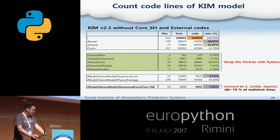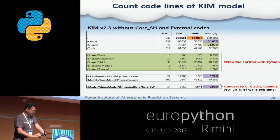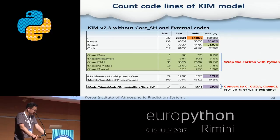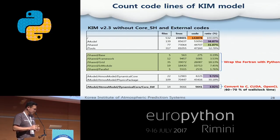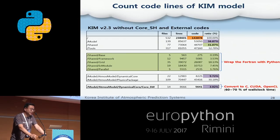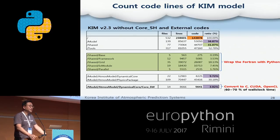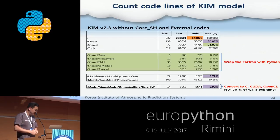I counted the code lines of the model being developed in my company. The total number of lines is about 239,000, and about 144,000 excluding comments and blank lines. Note that the dynamical core, which covers about 60 to 70% of the model workload time, is about 5,600 lines, which occupies only about 4% of the total lines. I changed only this part into CUDA and OpenCL codes and integrated them using PyMip. Many scientific computations take a lot of computation time in a small portion of the code, and that's why I think the methodology using PyMip is useful for many scientific computations.